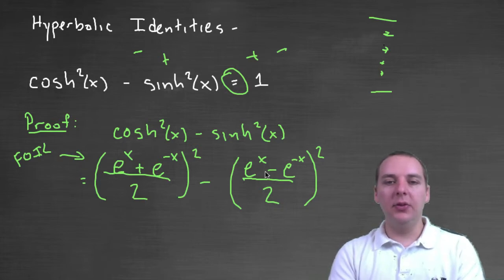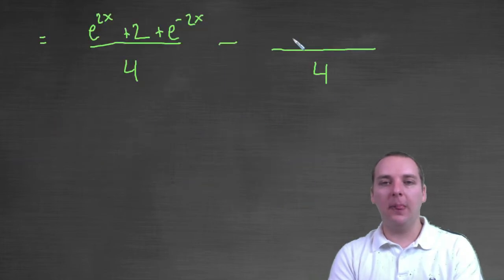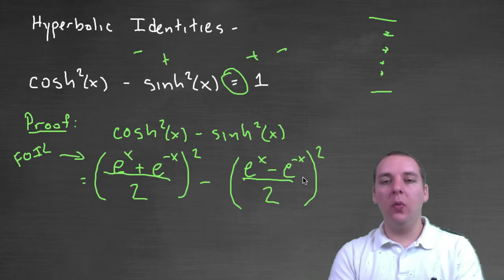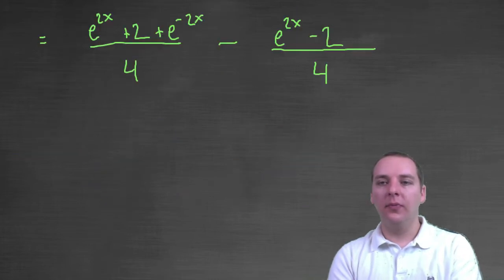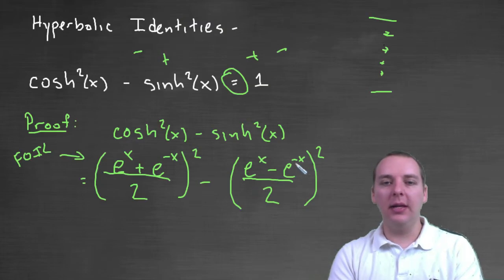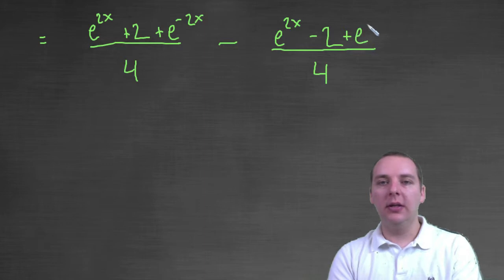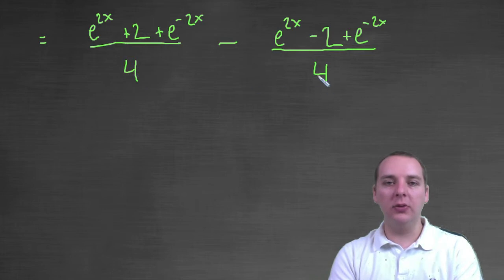This numerator here would be e to the two x. The outer would be one, the inner would be negative one, which would make a total of negative two. And the last would be e to the negative two x, so plus e to the negative two x. So I foiled that, foiled that, squared the two, squared the two, everything looks good.